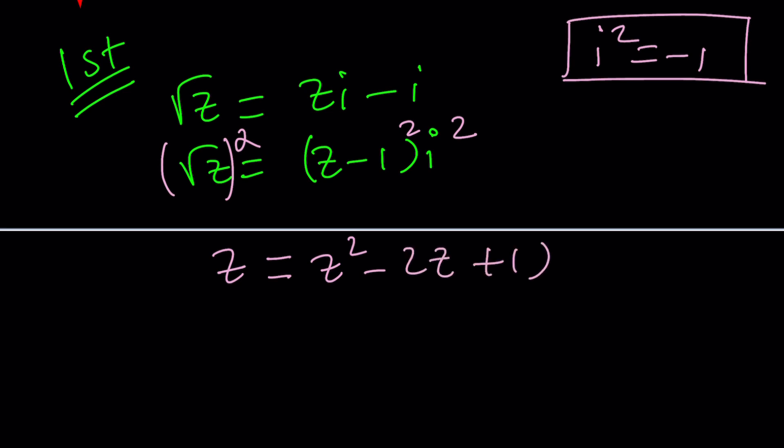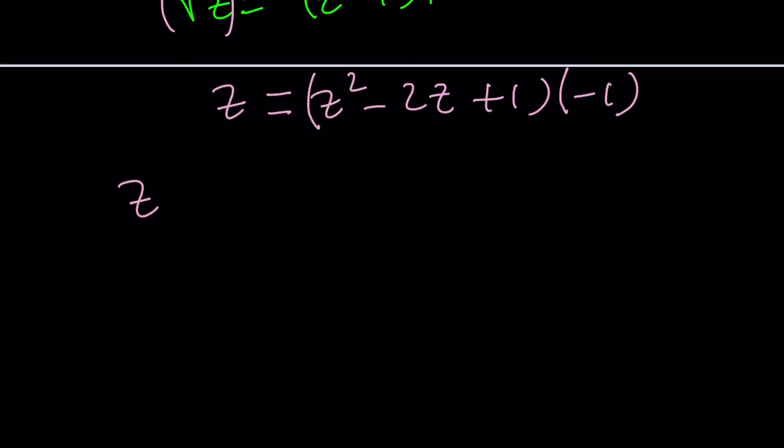sorry, I have to say that, times i squared, which is negative one, right? So we're going to go ahead and distribute the negative one. That's going to give us negative z squared plus 2z minus one. And let's put everything on the left hand side where things are positive. z squared, z minus 2z, it's minus z, plus one equals zero.